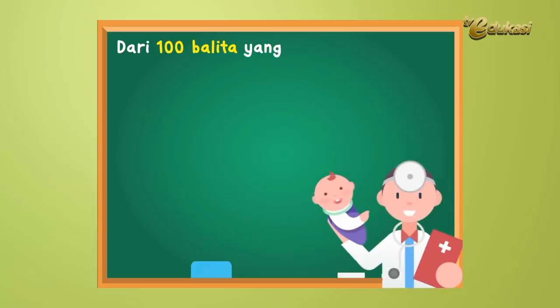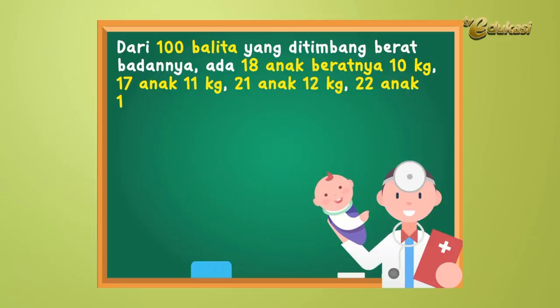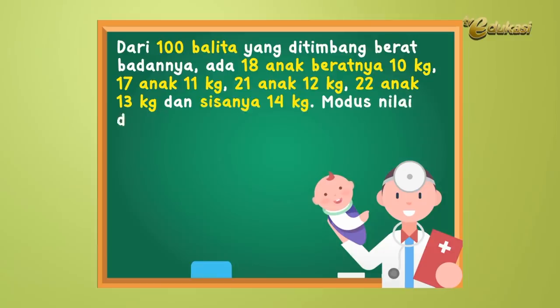Dari 100 balita yang ditimbang berat badannya: 18 anak beratnya 10 kg, 17 anak 11 kg, 21 anak 12 kg, 22 anak 13 kg, dan sisanya 14 kg. Modus dari nilai data tersebut adalah?